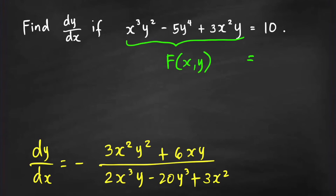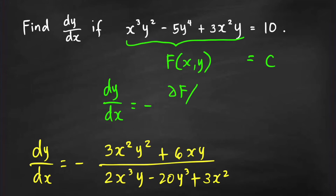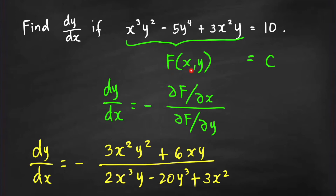We have a constant on the right-hand side. From multivariate calculus, you can derive this equation: dy/dx = −(∂f/∂x) / (∂f/∂y). A partial derivative is computed when we find the derivative of a function of more than one variable with respect to one of its variables, treating the others as constants.